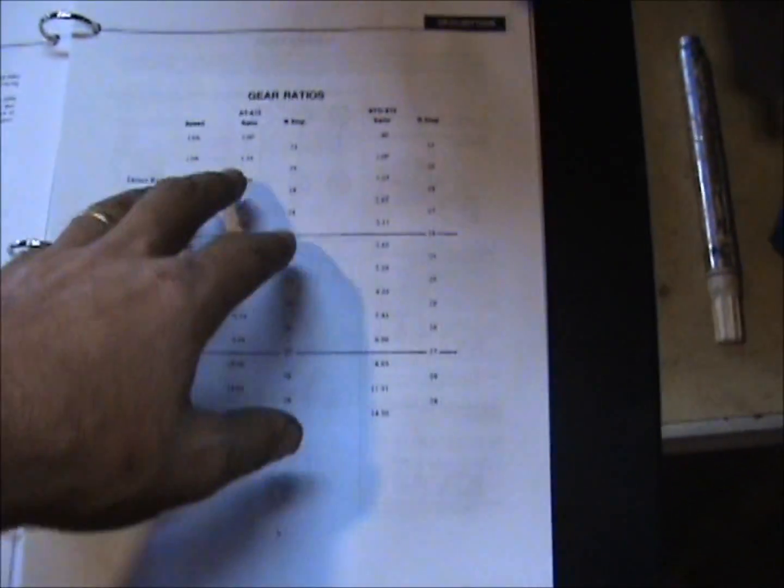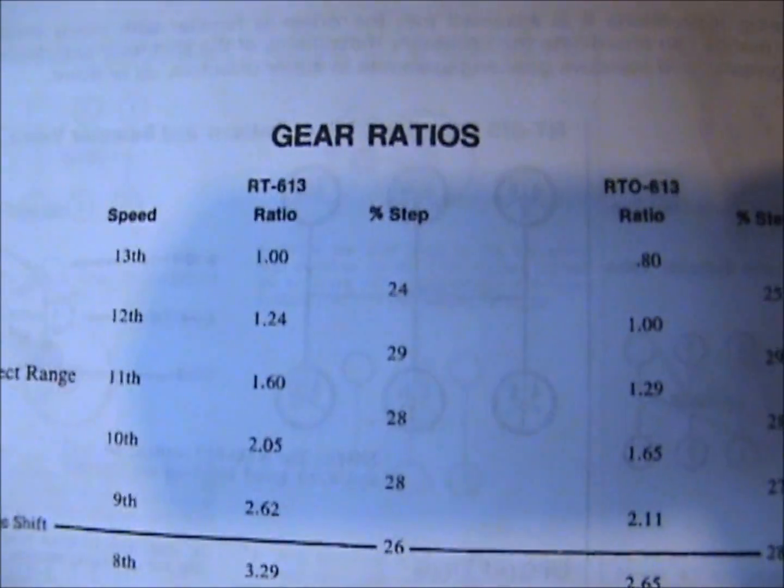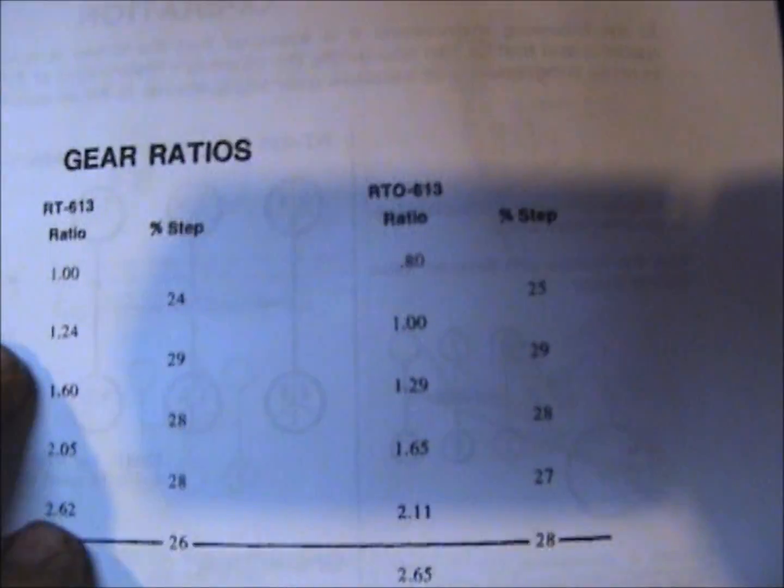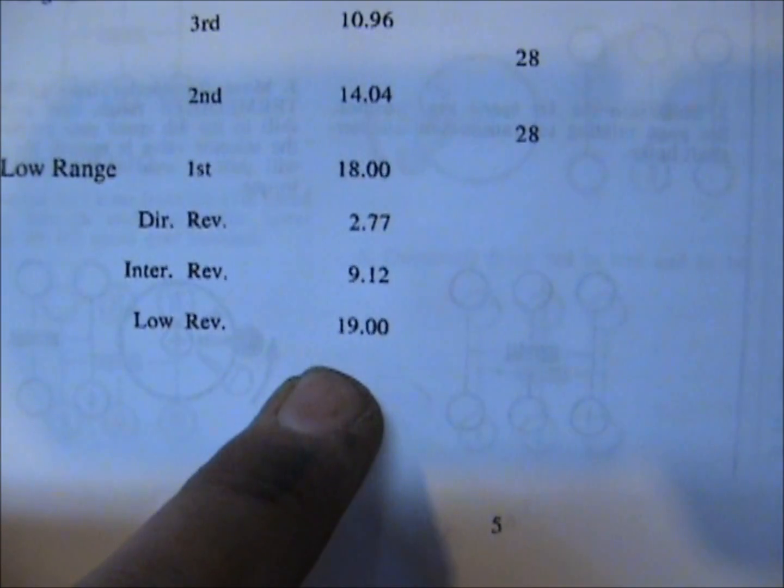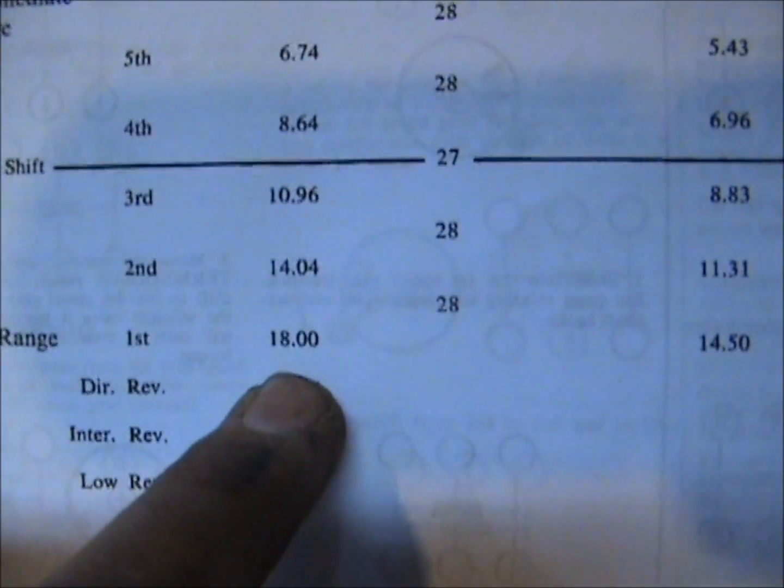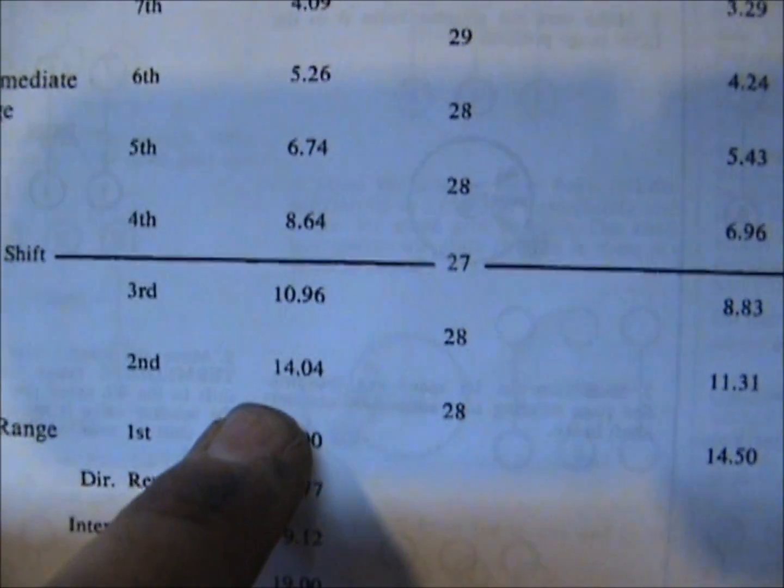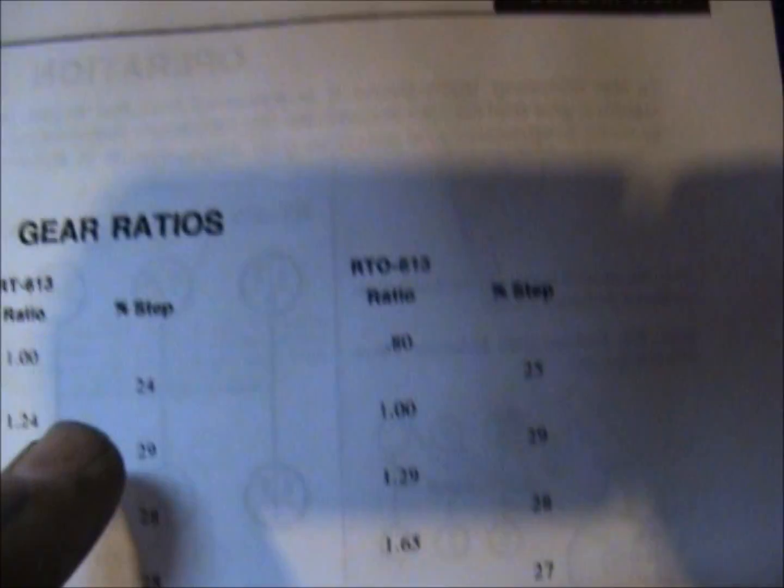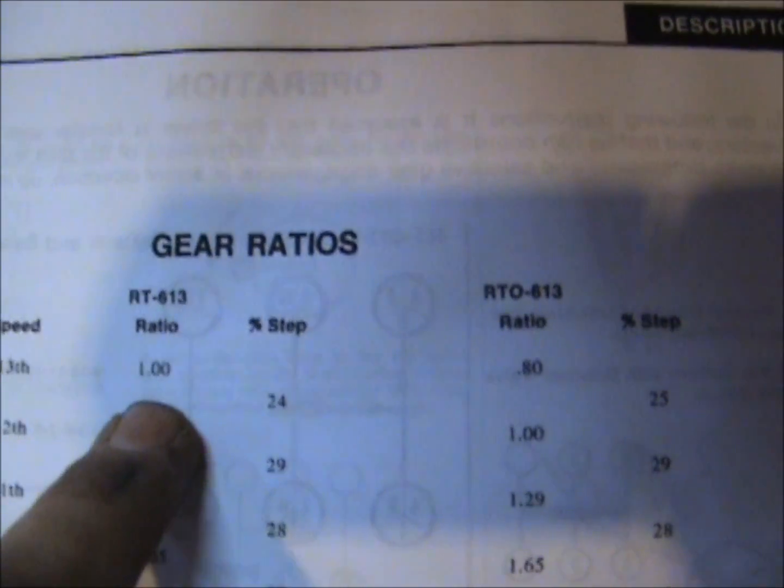I won't tell you how many times I had to do it to get it right, but there's all your gear ratios and you can see what you lose on your bottom. Your first low, which is 18 to 1, your first low on the RTO is 14.5, which is almost like second.